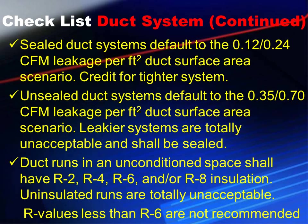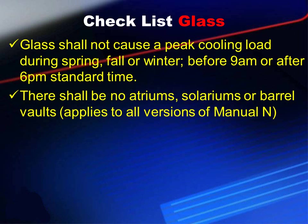Duct runs in an unconditioned space shall have R2, R4, R6, or R8 insulation. Uninsulated runs are totally unacceptable, and R-values less than R6 are not recommended. Checklist glass: glass shall not cause a peak cooling load during spring, fall, or winter before 9 a.m. or after 6 p.m. standard time — the glass should cause a peak load on your design day. There shall be no atriums, solariums, or barrel vaults. This applies to all versions of Manual N, not just the abridged edition.